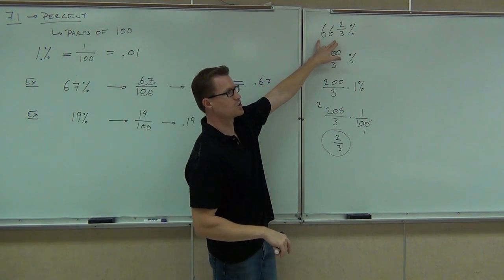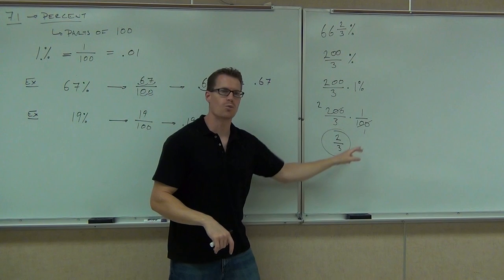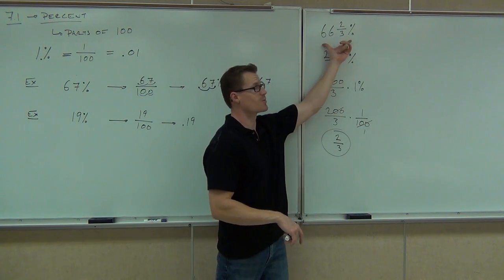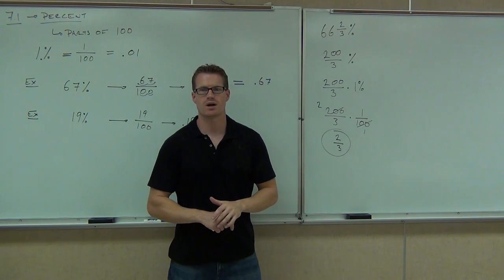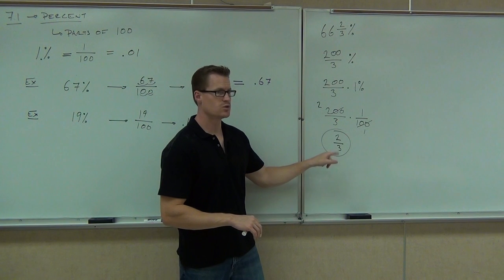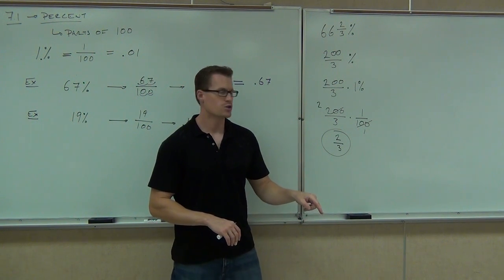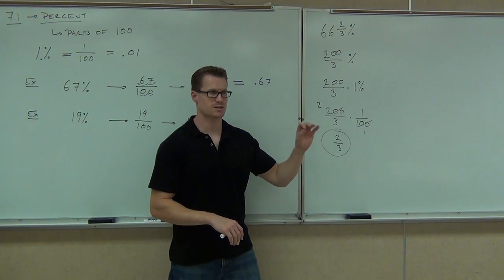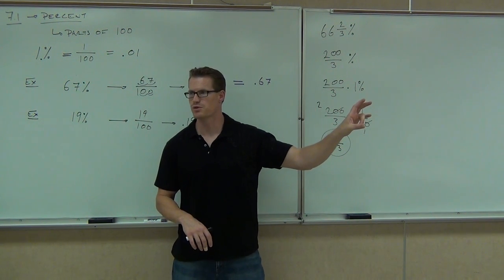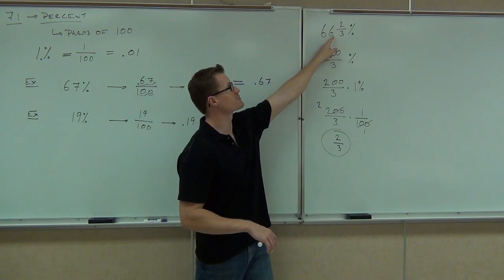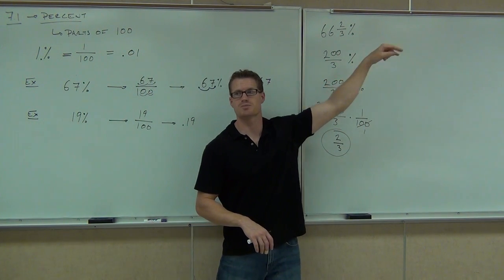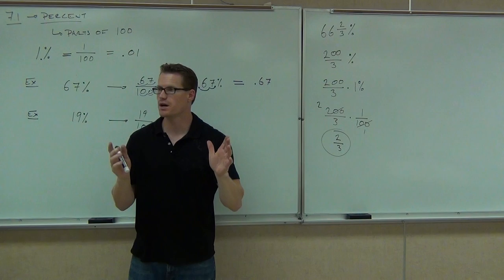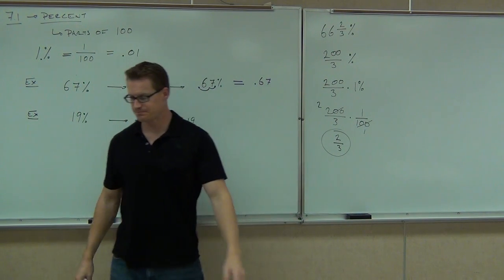Changing from 66 and 2/3 percent into just a fraction — notice there's no more percent. You use the fact that a percent is 1 over 100 to change from a percent into a fraction. If you divide 2 over 3 on your calculator, you're going to get 0.66666... with a 7 at the very end because it rounded. That's 66.666...% right there. We've just moved the decimal two spots — that's really all you've done, just in terms of a fraction.